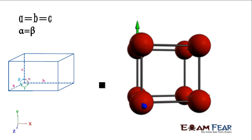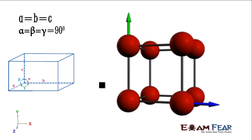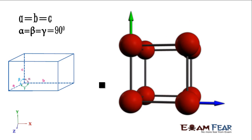Let's see the simple cube. All the sides are equal and all the angles are 90 degrees. There are eight atoms on the different corners. A is equal to B is equal to C. The alpha angle is the angle between B and C, beta is the angle between A and C, and gamma is the angle between A and B. In simple cube, all the atoms are on the corners.